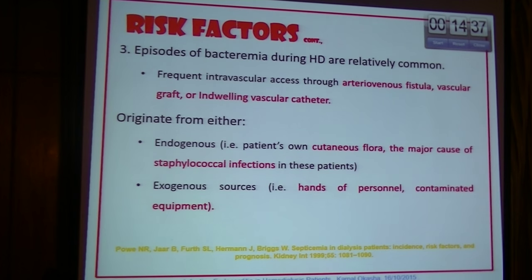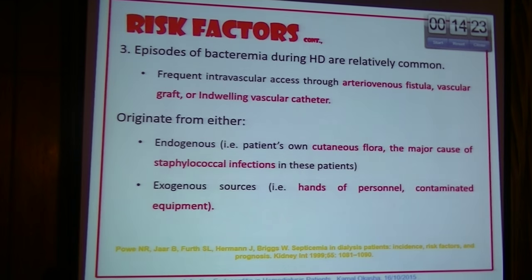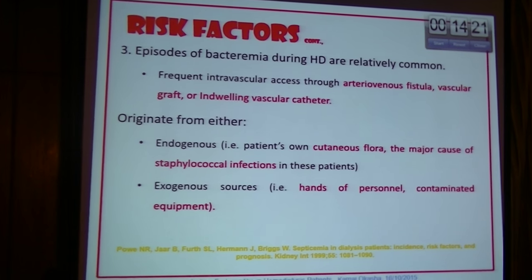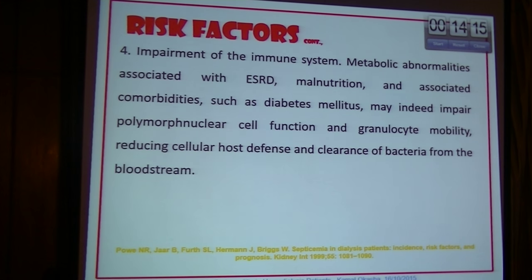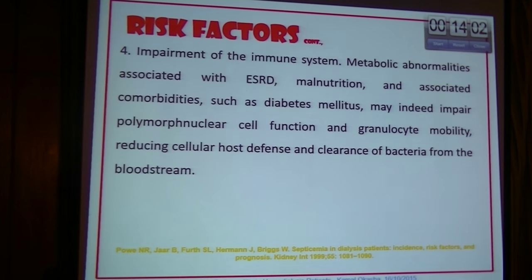Other risk factors include susceptibility to bacteremia through arteriovenous access and indwelling vascular access, originating from either endogenous cutaneous flora or exogenous sources such as personnel handling or contaminated equipment. Additionally, impairment of host defense mechanisms and the immune system — as uremia is considered one of the immune deficiencies — potentiates the risk for infection anywhere, including infective endocarditis.